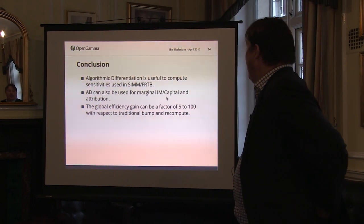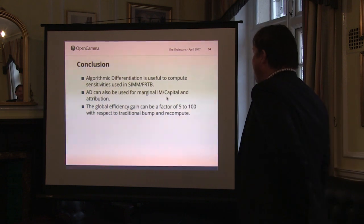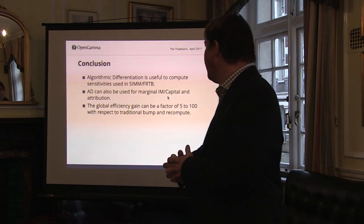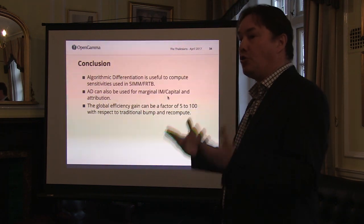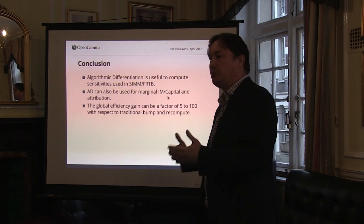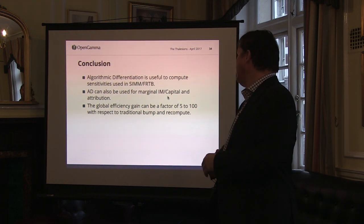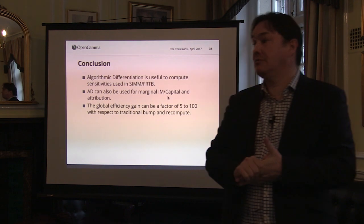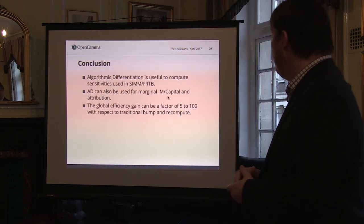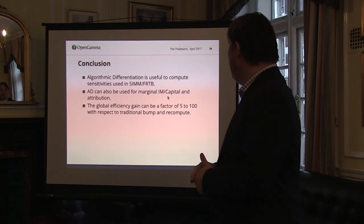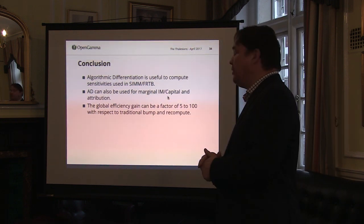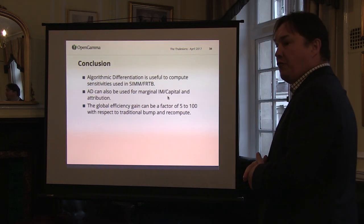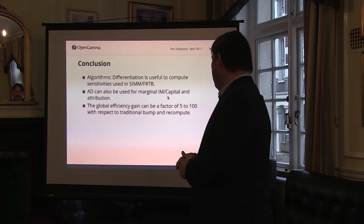In conclusion: hopefully I've convinced you that algorithmic differentiation is useful for things like SIM and FRTB — useful for the inputs, and also useful for the outputs if you want to do attribution or marginals, so it's used twice. The gain you can expect depends on the number of sensitivities, but in practice between a ratio of 5 to 100 is something you can expect from these techniques.